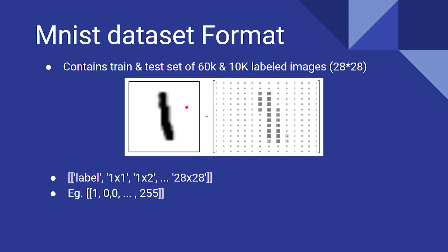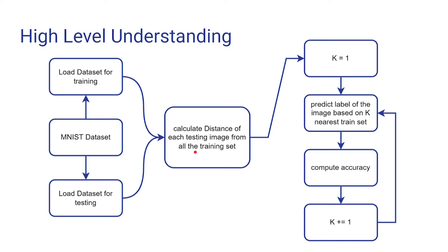Here is the high-level understanding of our implementation. We have our MNIST dataset. We took the first 6,000 images for training and last 1,000 images for testing. Then we calculated the Euclidean distance of each test image from all the training images and sort them in ascending order.